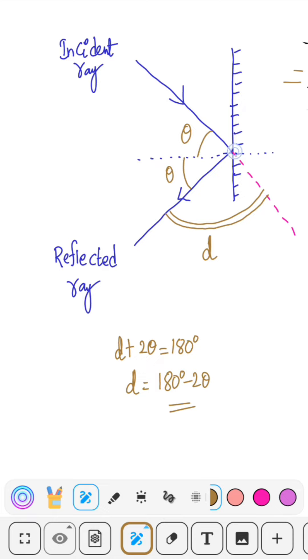According to law of reflection, we know that angle of incidence is equal to angle of reflection. Here, this is the angle of reflection. Therefore, angle of incidence is equal to angle of reflection.